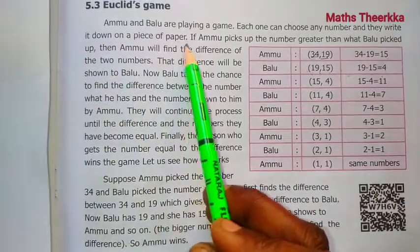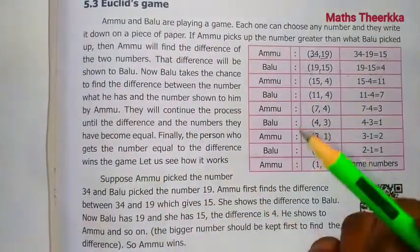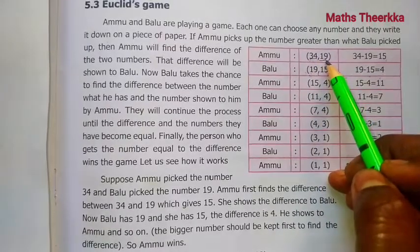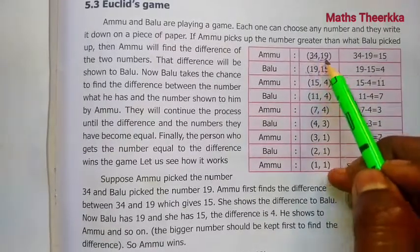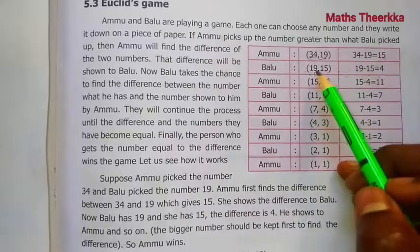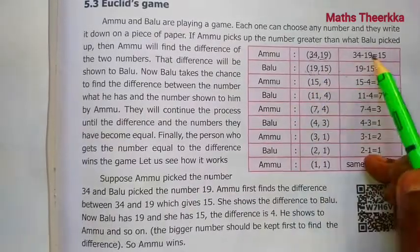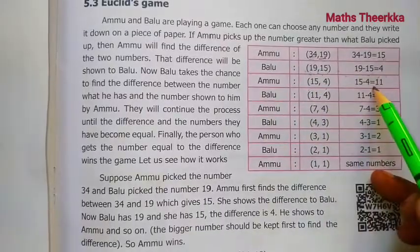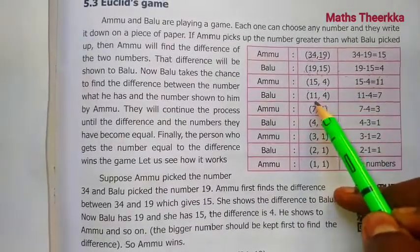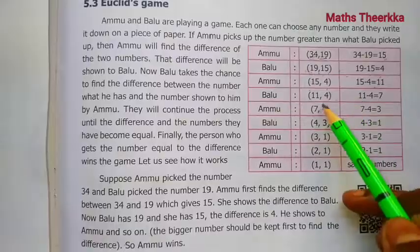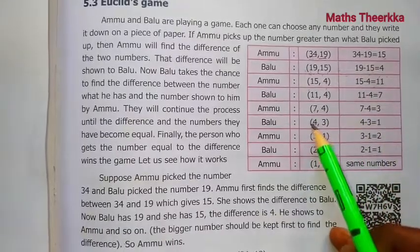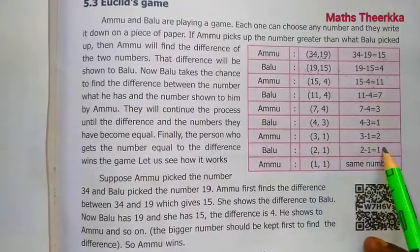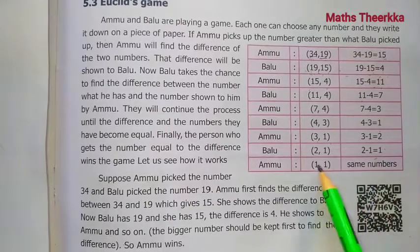The Euclid game: Amu and Balu are playing a game. Each one can choose any number and they write it down on a piece of paper. Suppose Amu picks 34 and Balu picks 19. Then: 34 minus 19 = 15, then 15 minus 4 = 11, then 11, 4, then 7, then 4, 3, 1.